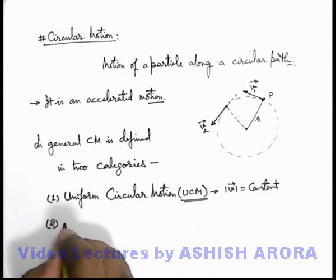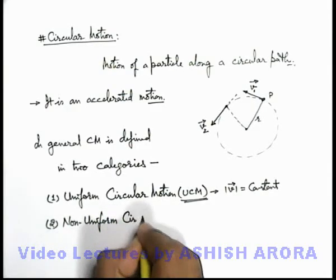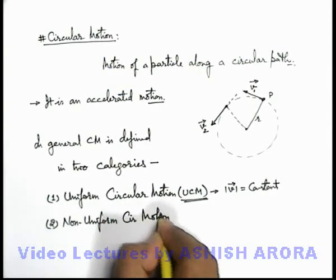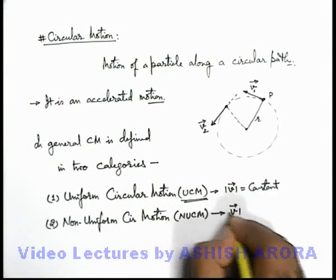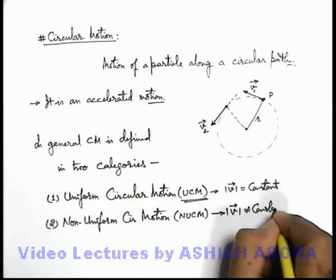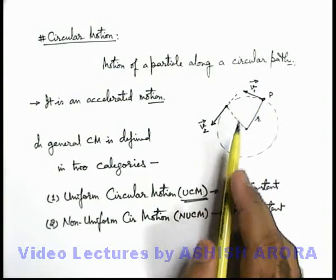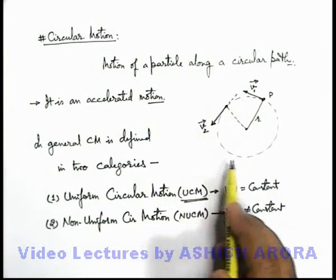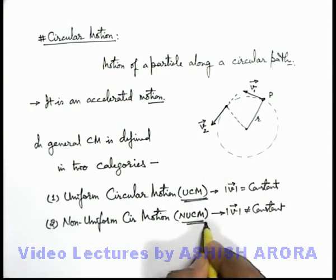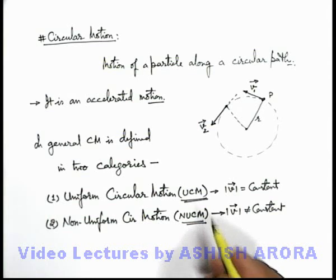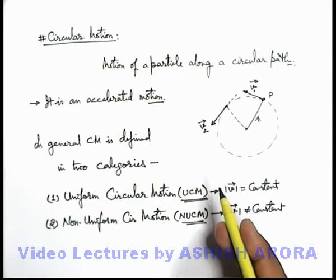The second category is non-uniform circular motion, also abbreviated as NUCM. In non-uniform circular motion, the magnitude of the velocity vector no longer remains constant throughout the motion. Whenever a particle is in circular motion and its speed continuously changes at different positions, it is termed as non-uniform circular motion. We are going to discuss various aspects related to uniform and non-uniform circular motion and their various kinds of analysis.